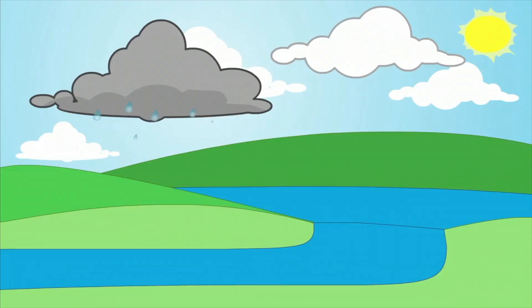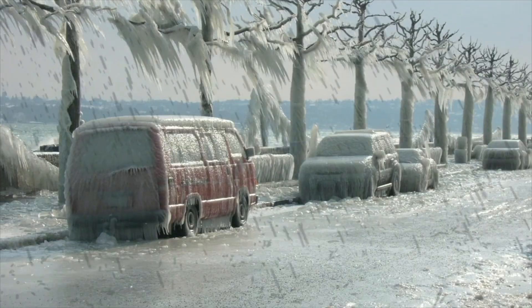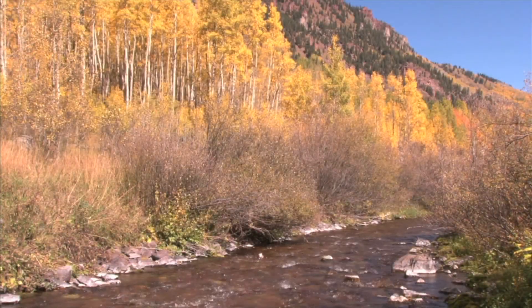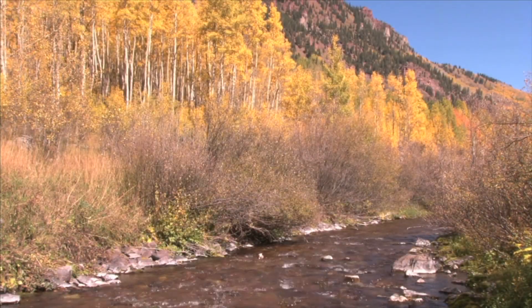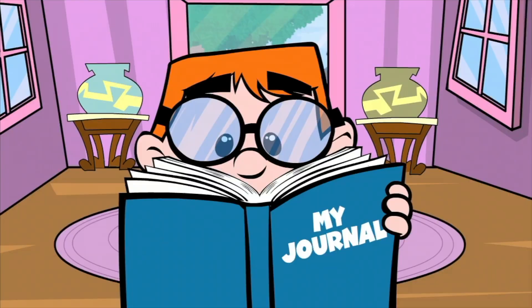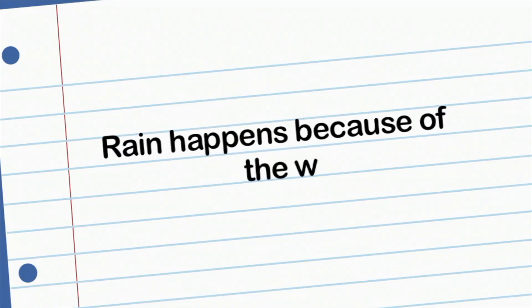Precipitation happens when there is so much water packed together that the air can't hold it anymore. The clouds get heavy and water falls back to the earth as rain, hail, sleet, or snow. Some of the rain will collect in the ground to begin the water cycle all over again. I'm going to write that down in my journal: rain happens because of the water cycle.